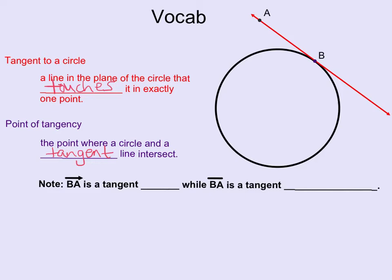Now one note that I want you to see here is that the ray BA is tangent. And because it's a ray, we call it a tangent ray. Now this here is a line segment. Line segment BA is tangent. And so because it's a segment, we call it a tangent segment.